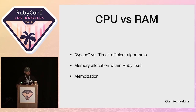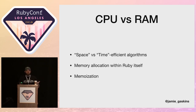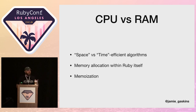Memoization is another big technique — it's really a fancy term for caching at the object level. Rather than running the same computation repeatedly, you run it once, store the result on an instance variable, and the next time you call that method you just return the instance variable.